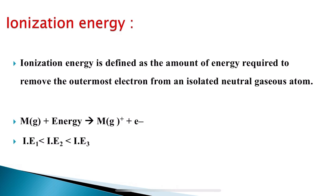The five periodic properties were: first, atomic radius; second, ionization energy; third, electron affinity; fourth, electronegativity; and the fifth is metallic character.